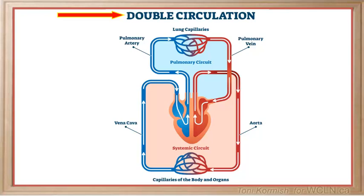Remembering that the function of arteries is to carry blood away from the heart, the blood is delivered through the pulmonary trunk to the pulmonary arteries, which carry the spent blood to the lungs to deliver carbon dioxide and pick up oxygen.